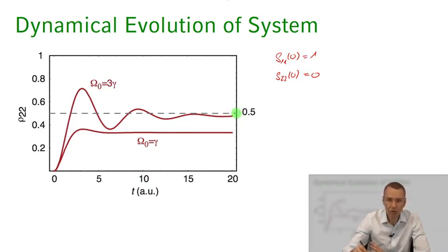And if you plot this regardless of what value you choose of ω₀, this steady state value will always be below 0.5 and we'll come to that in a second.